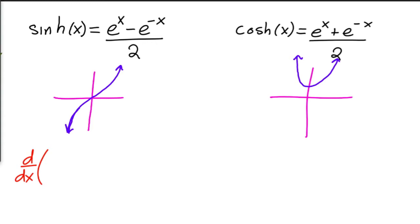So let me do the derivative of e to the x minus e to the negative x over 2, and as you can probably guess, this is relatively easy to do. Divided by 2, that's just a constant.